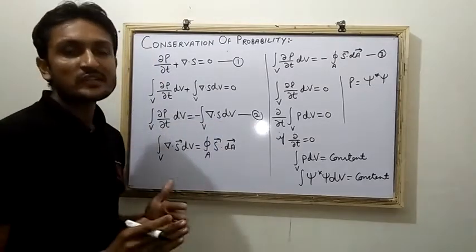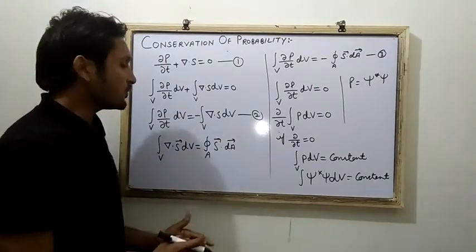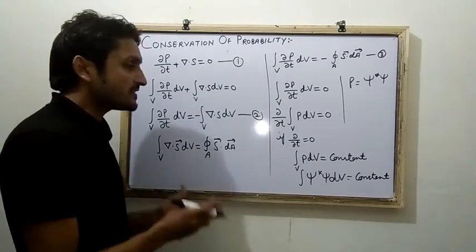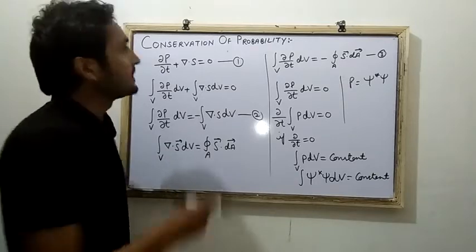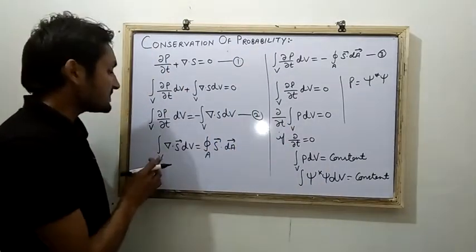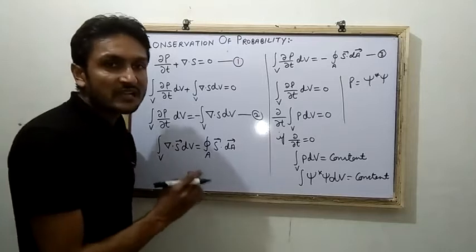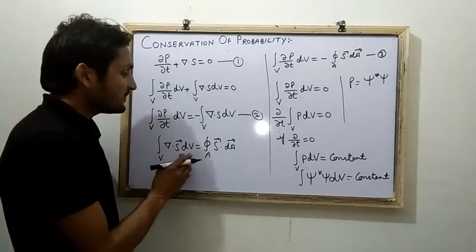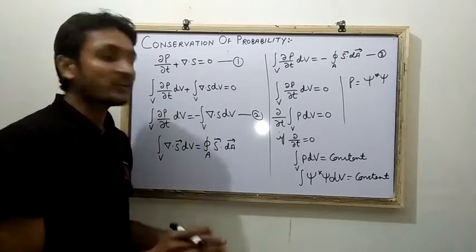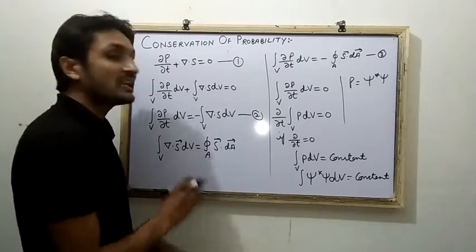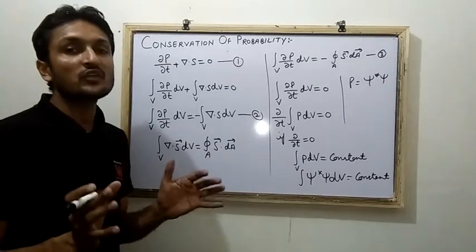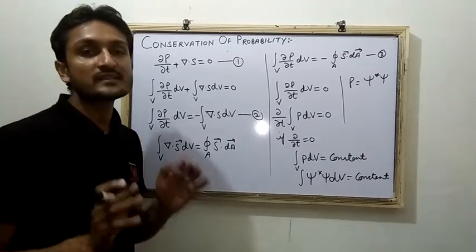We should know the Gauss divergence theorem. With the help of the Gauss divergence theorem, we can easily prove another version of probability conservation. Applying this theorem, we can write: the volume integral of del dot S dv equals the surface integral S dot dA, where A is the surface area and V is the complete volume of the system.